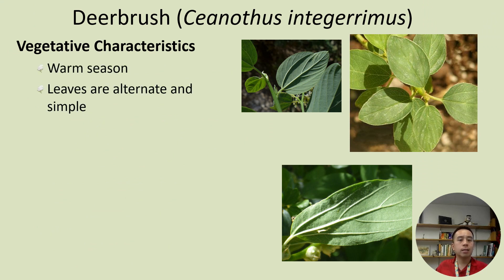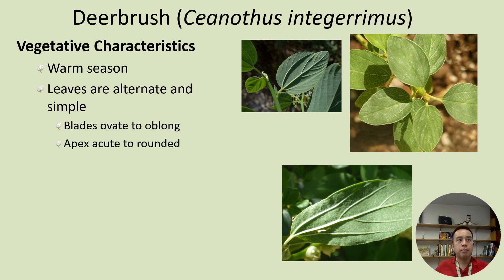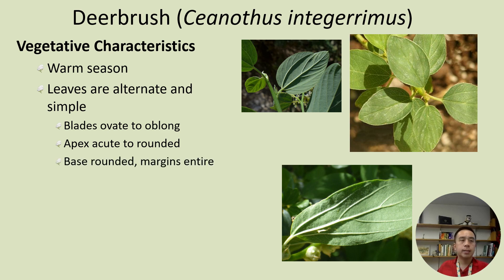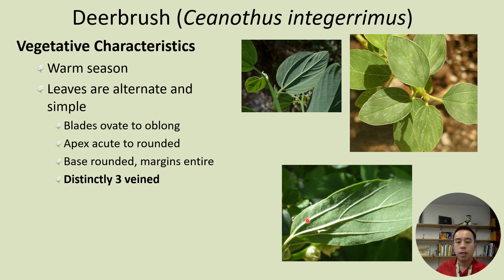Vegetatively speaking, it's a warm-season plant. The leaves are alternate and simple, and the blades are ovate to oblong, typically with the apex acute to rounded — meaning the leaf tip is either an acute angle or slightly rounded. The base is typically rounded, the margins are entire with no serration, and it has distinctly three-veined leaves. You can see three distinct veins coming out from the petiole, distinct from the secondary veins branching off the primary mid-vein.